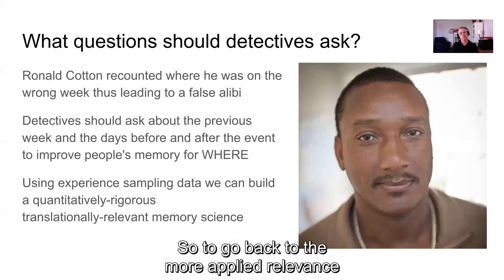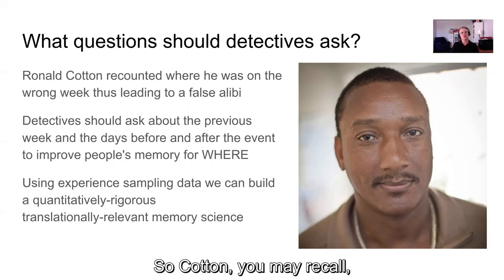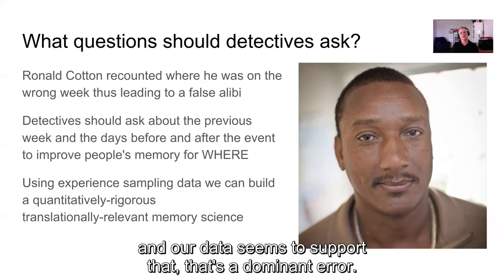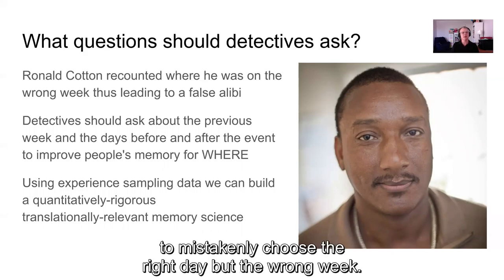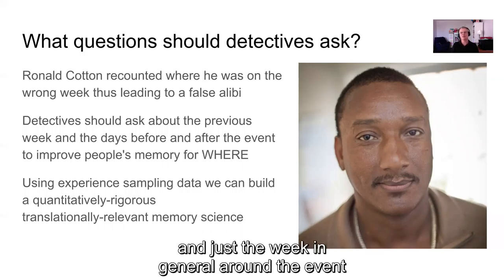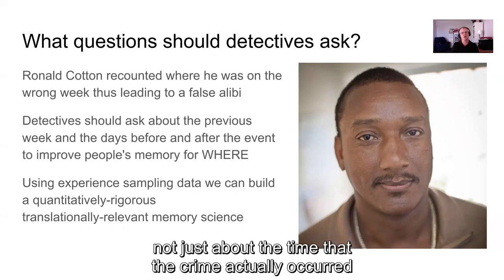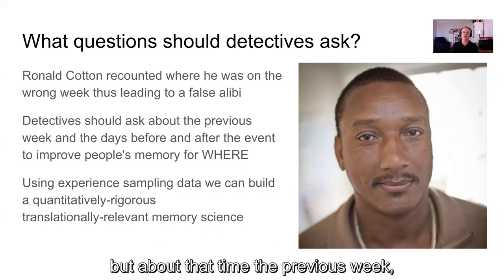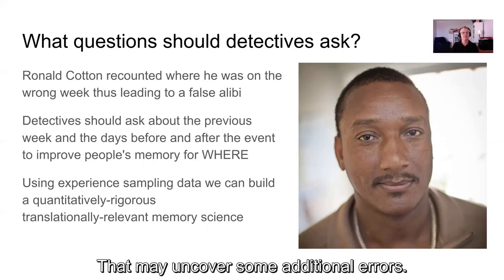Returning to the applied relevance: what should detectives be asking? Cotton recounted where he was on the wrong week, leading to a false alibi, and our data supports that as a dominant error — people are likely to mistakenly choose the right day but the wrong week. In addition, the days before and after, and the week in general around the event, are also important. So a detective should ask not just about the time the crime occurred, but about that same time the previous week and on days around it — that may uncover additional errors.